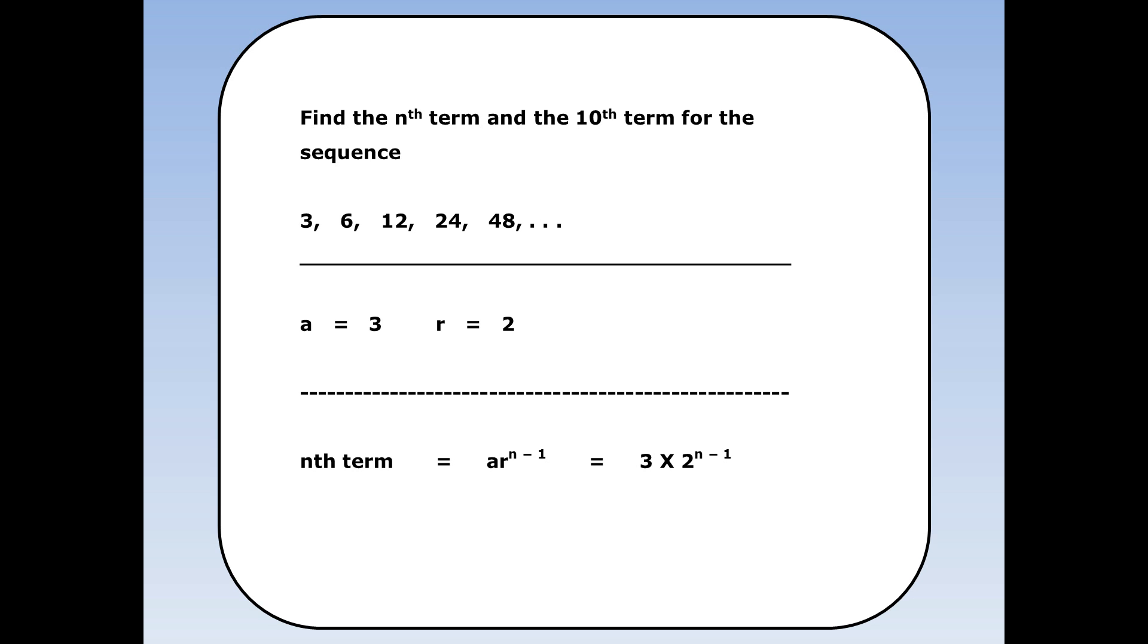The nth term is a times r to the power of n minus 1. If we substitute in a is 3 and r is 2, we end up with 3 times 2 to the power of n minus 1.